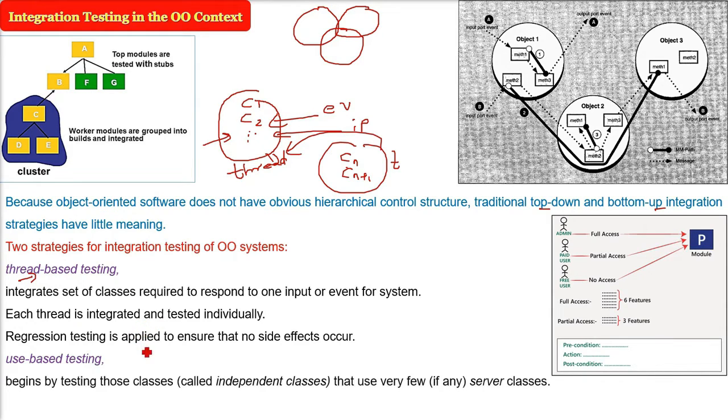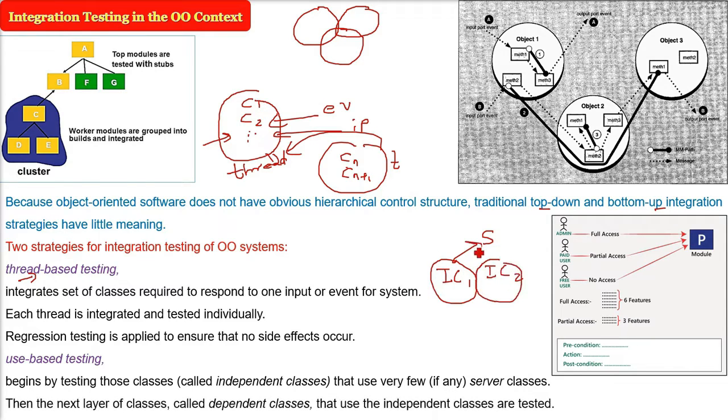Then we have use-based testing. This begins by testing those classes. Let me give you an idea: there are certain server classes, certain independent classes, and certain dependent classes. There are dependent classes on server class, but certain classes are somewhat independent, not dependent on server class. Some classes may have direct interaction or dependency with the server class.